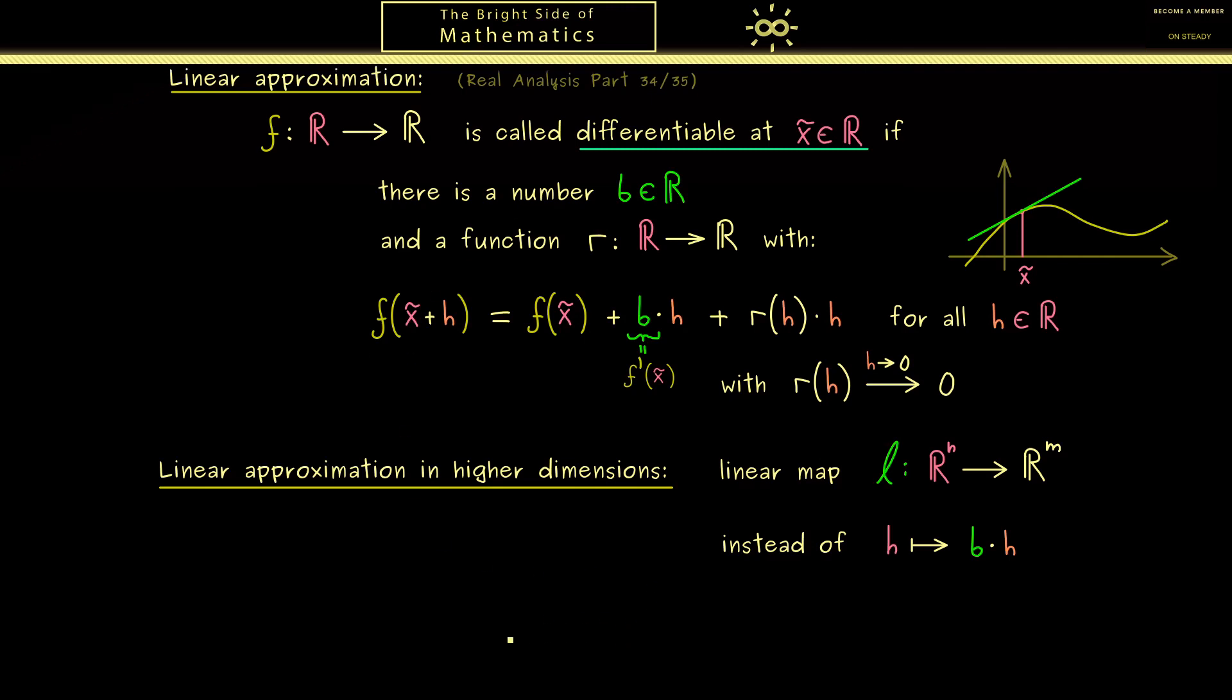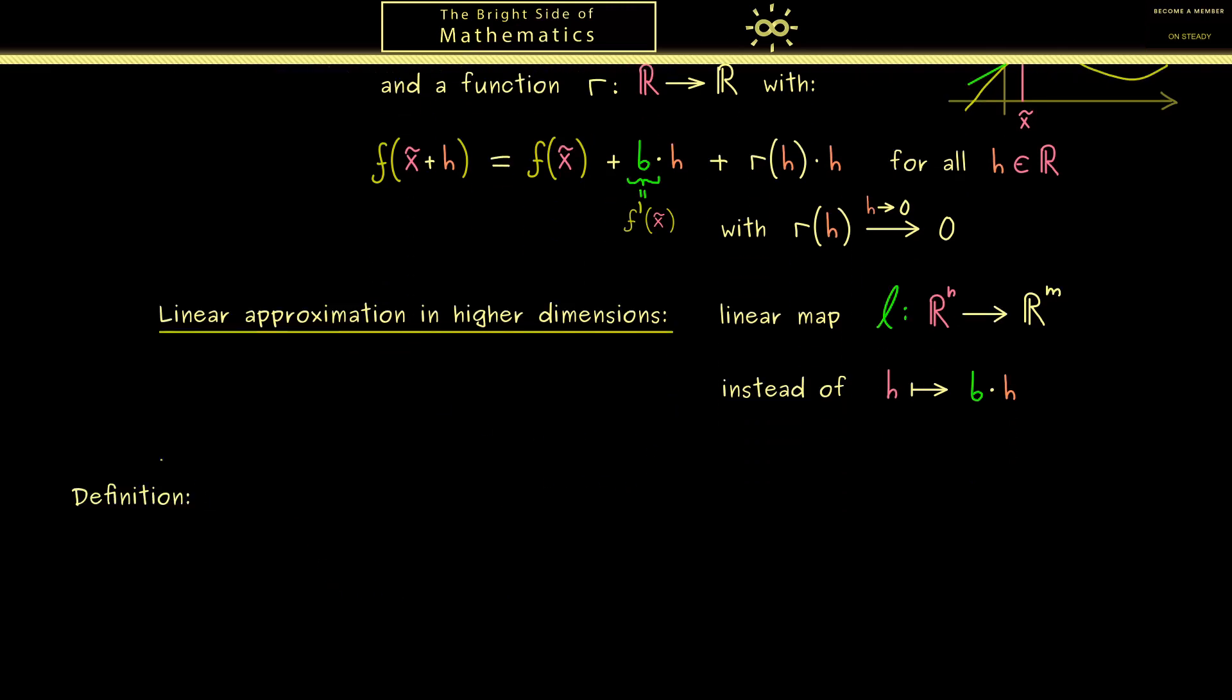Then I would say let's put all of this into a formal definition. So we consider the general case of a function from R^n into R^m. This means that we have exactly n variables and the values of the function are given by vectors with m components. Now the term we want to define is differentiable as we have it in one dimension, but to make it clear we often talk of totally differentiable. And as you know, this is a property that is defined point-wisely. So the function is called totally differentiable at a given point of the input space.